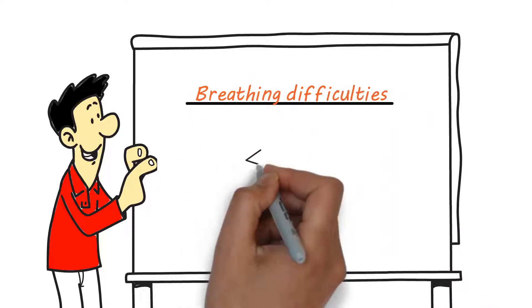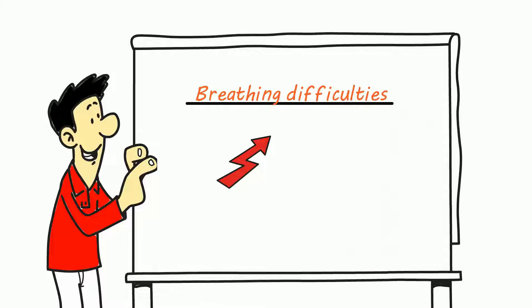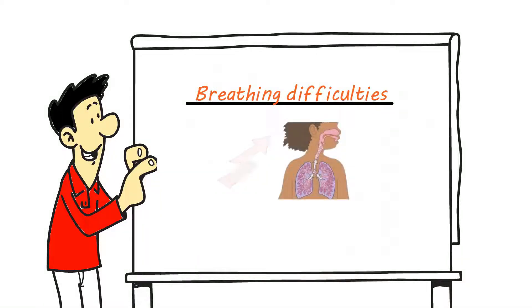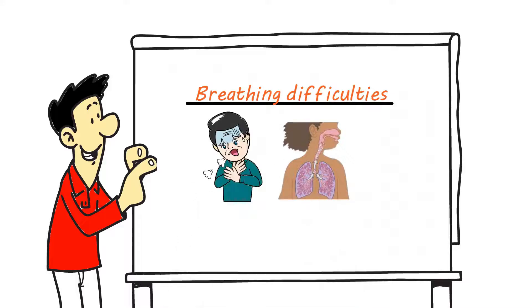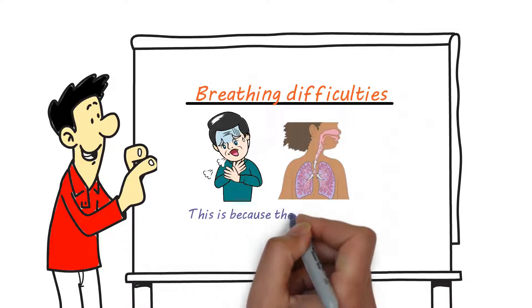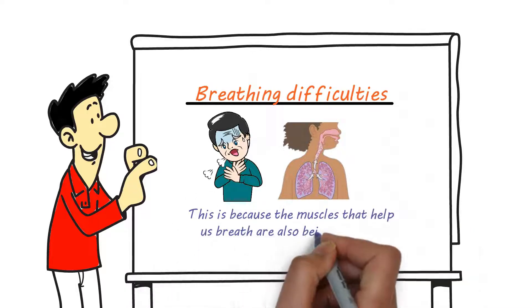Breathing Difficulties. As the disease progresses, individuals with motor neuron disease may experience respiratory difficulties such as shortness of breath or difficulty breathing. This is because the muscles that help us breathe are also being affected.